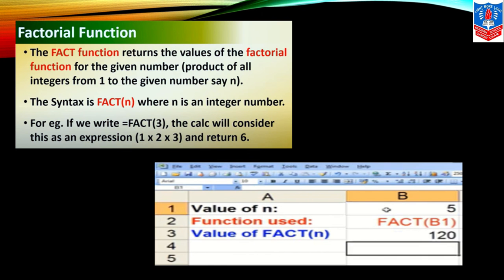Now factorial function. The FACT function returns the value of factorial function for the given number, product of all integers from 1 to given number say n. The syntax is FACT n or number, where n is integer number. For example, if we write equals FACT 3, the Calc will consider this as an expression 1 into 2 into 3 and returns 6. Here FACT number is 5, so we are taking FACT B1, output is 120. 5 into 4 into 3 into 2 into 1.